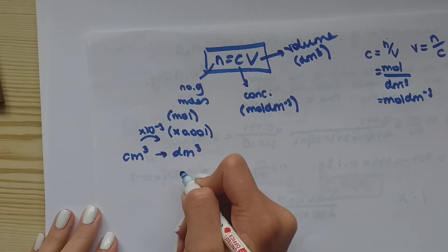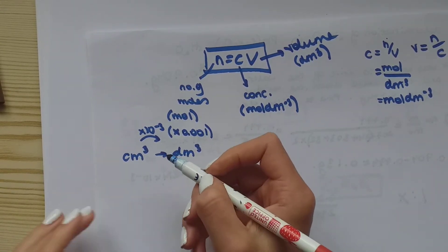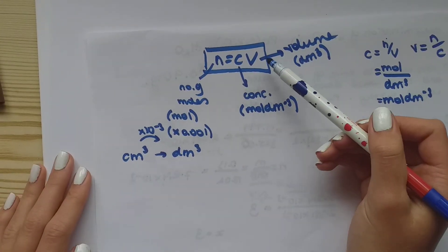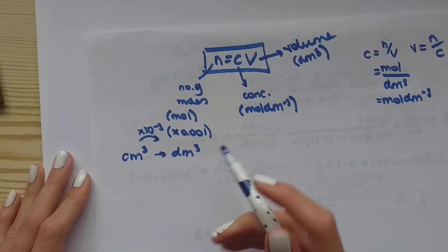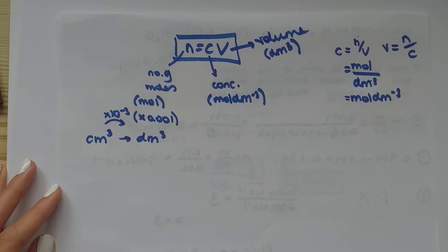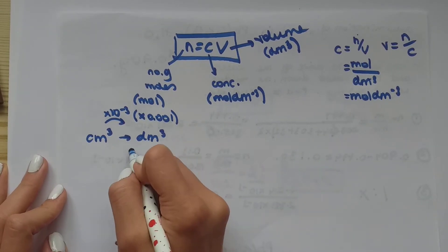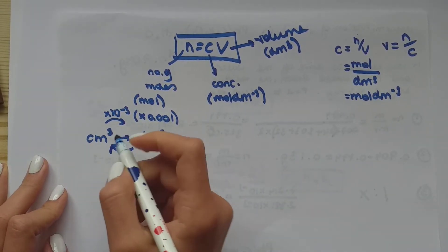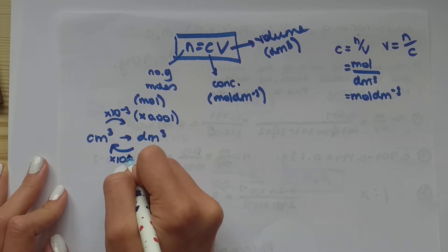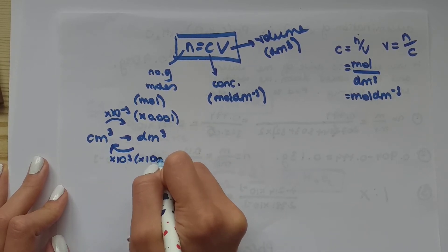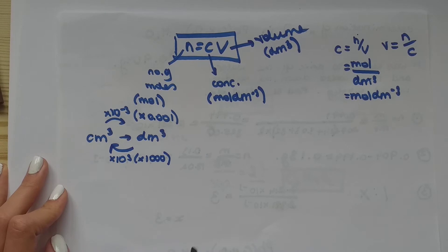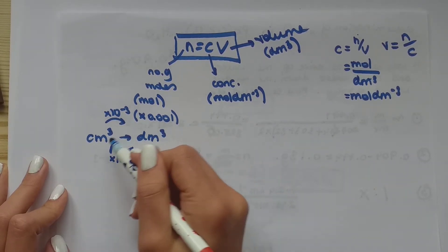However, sometimes when you finally work out your volume, you have it in decimeters cubed. The question tells you, show your answer in centimeters cubed. So if you have decimeters cubed and you want to transfer it into centimeters cubed, you do times 10 to the three. So times thousand.